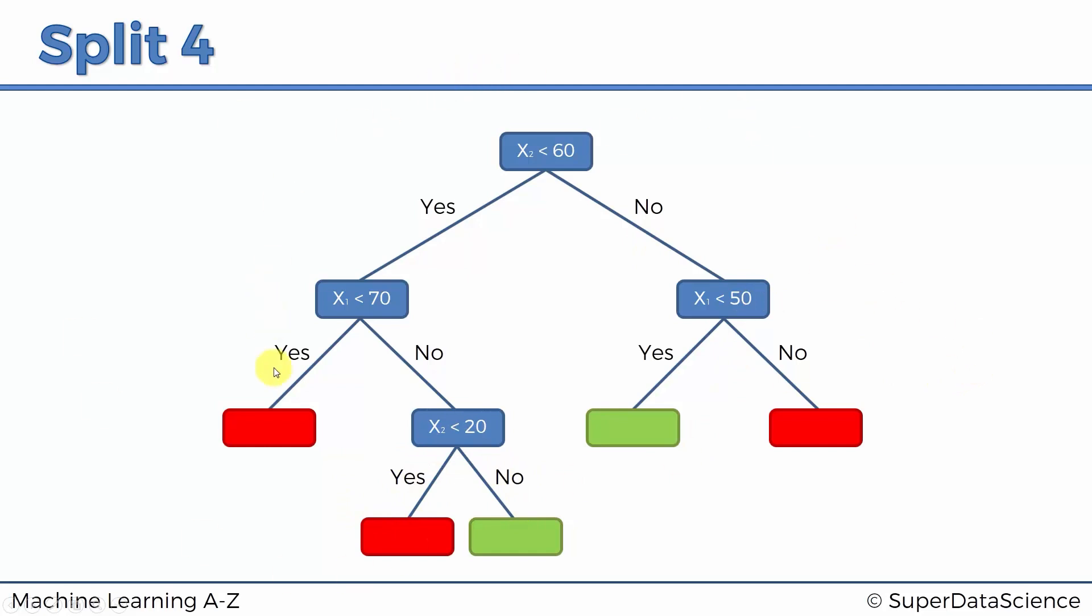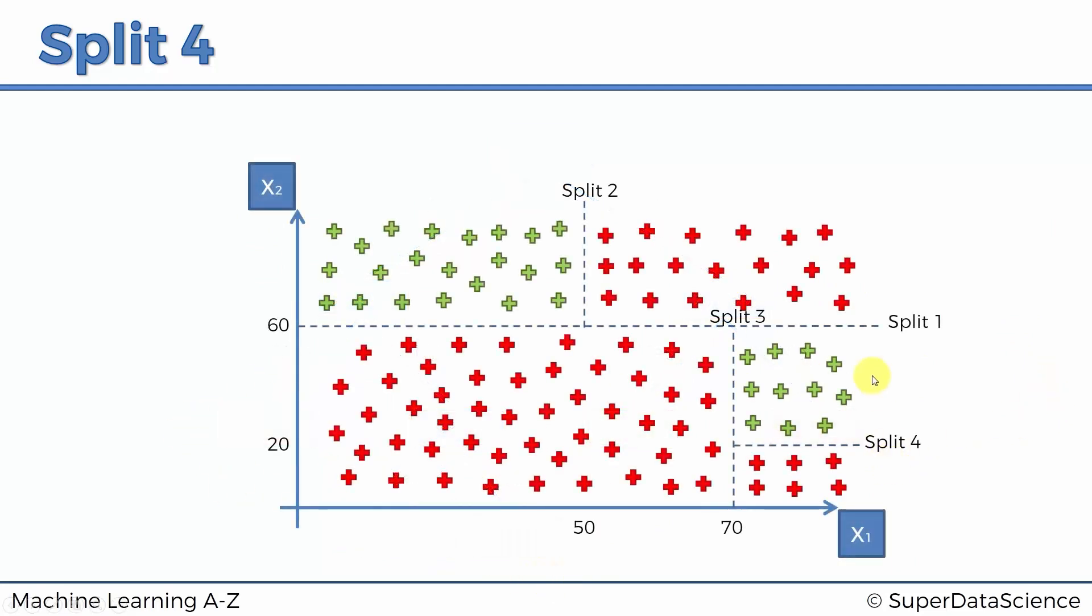With these decision trees, a good way to structure them is to always keep yes, yes, yes on one side. If you're looking for yeses, they're always going to the left, no's going to the right or vice versa, just don't mix them up. The terminal leaves will predict exactly what color or what class is left.